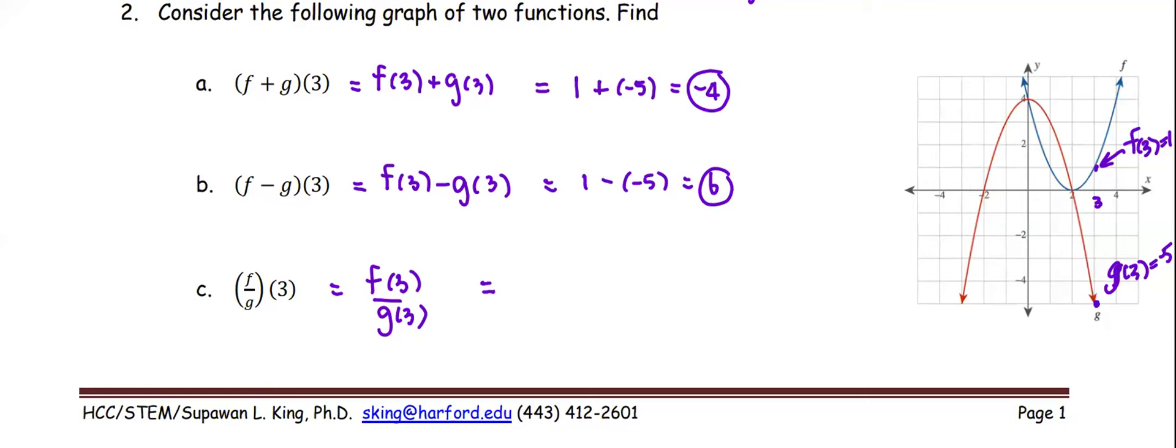f at 3 divided by g at 3, or 1 divided by negative 5, or negative 1 over 5.